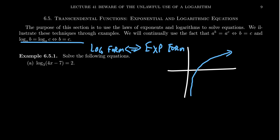Look at example A: log base 3 of (4x minus 7) equals 2. To solve for x, the first step is to get rid of the log by applying the inverse function — moving the log base 3 to the other side and switching to its inverse, which is the exponential base 3. So you get 3 squared, which equals 9.